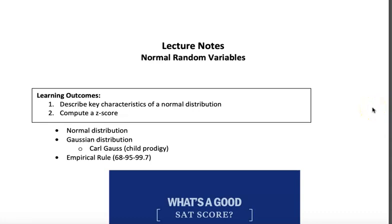Hello class. Welcome to our lecture today on normal random variables. So take a look here. We have two learning outcomes for the day. The first one is to be able to describe key characteristics of a normal distribution. The second one is to compute a z-score.